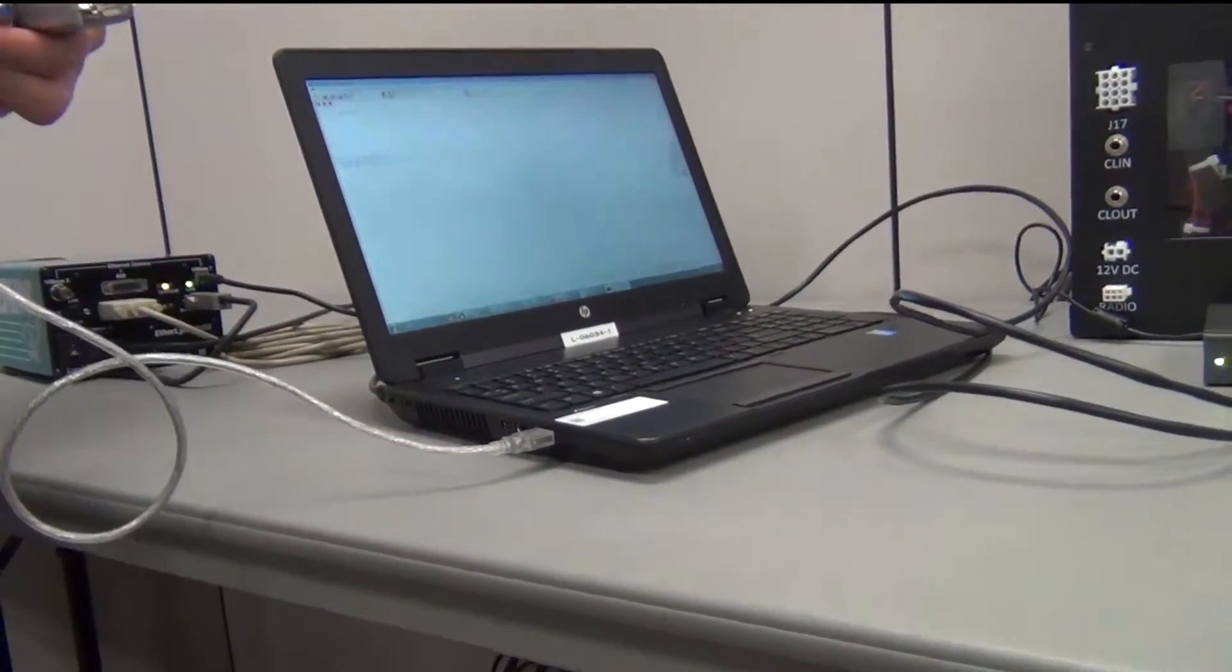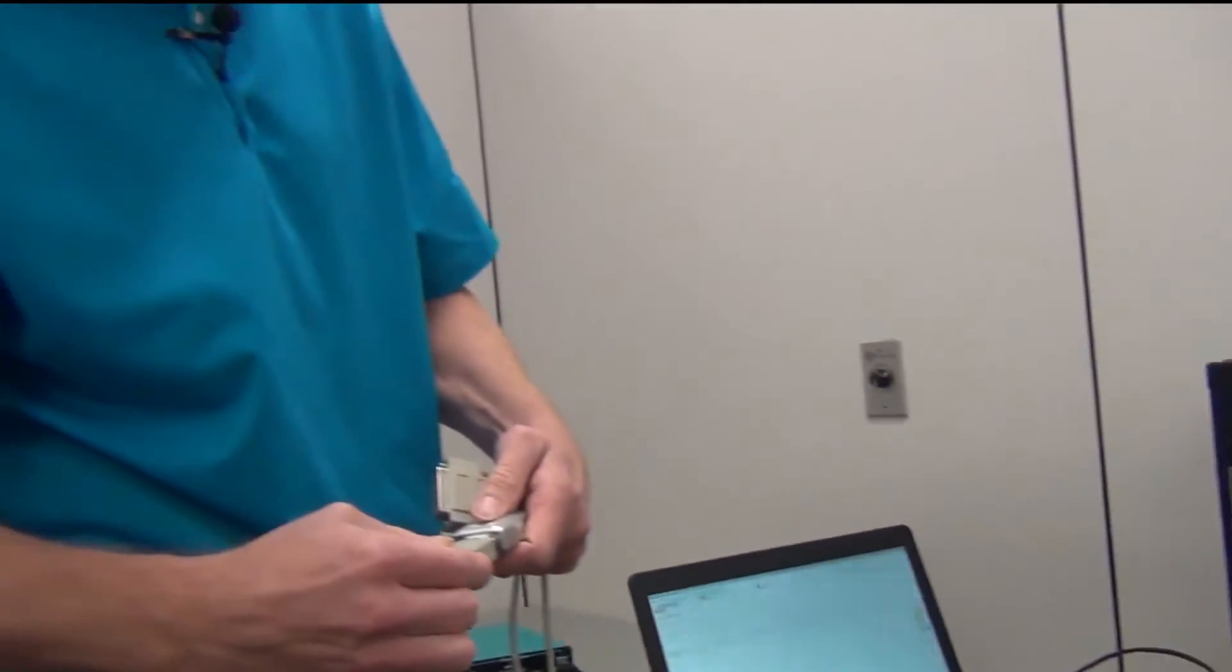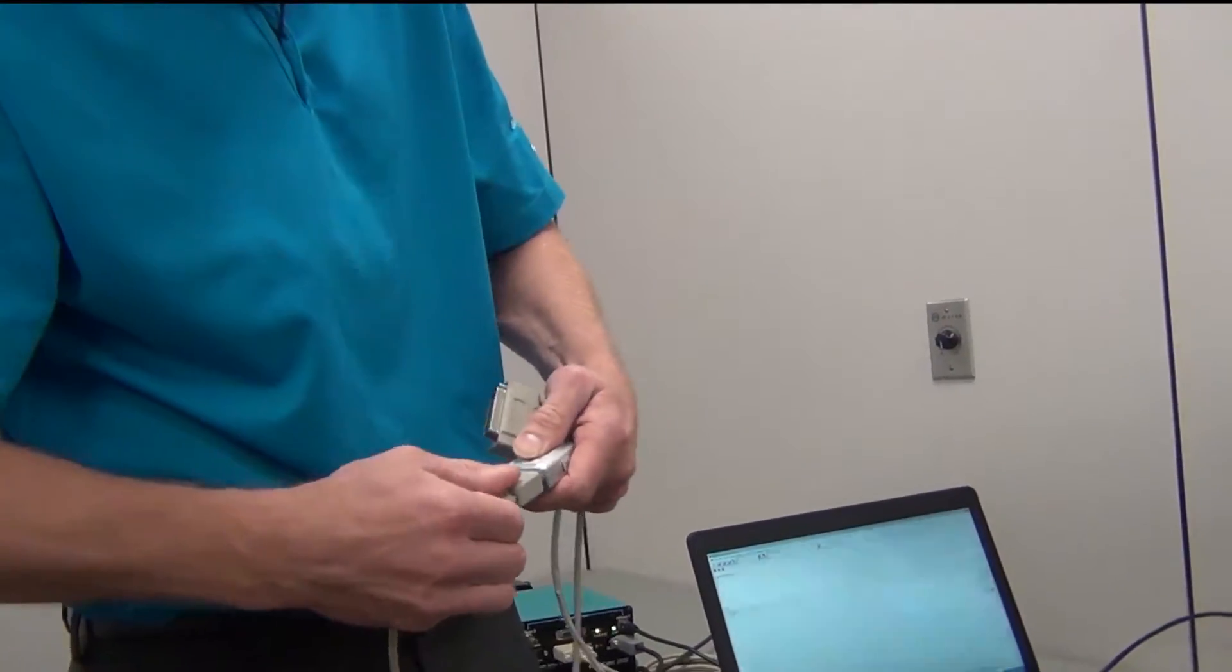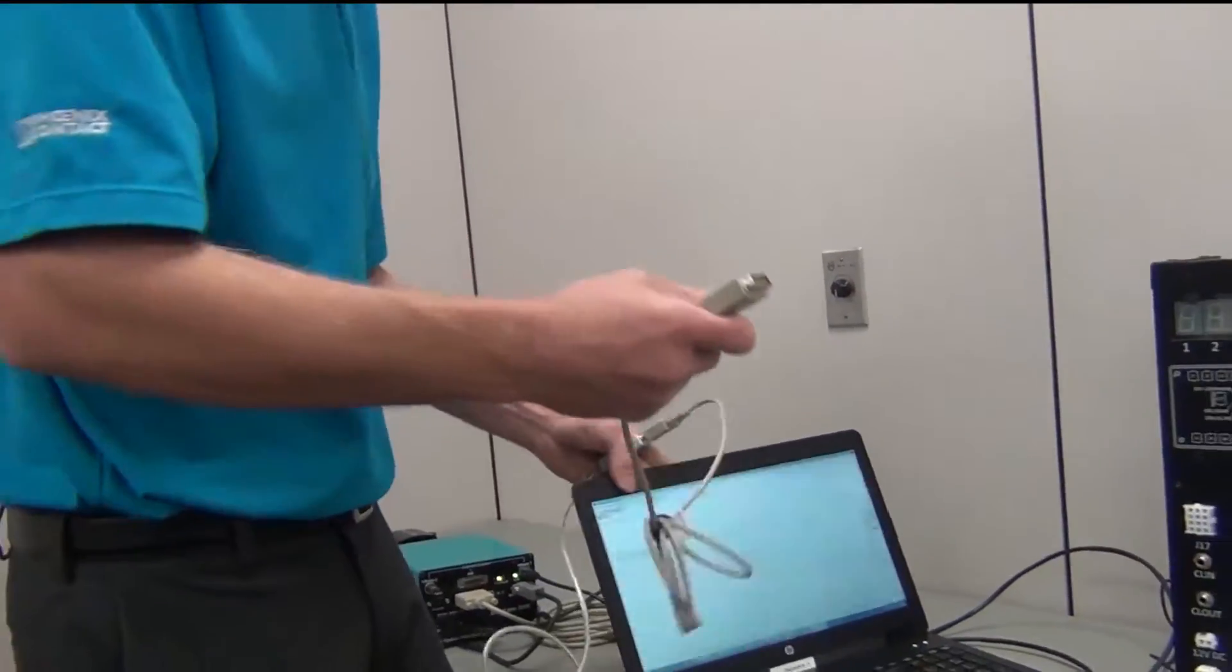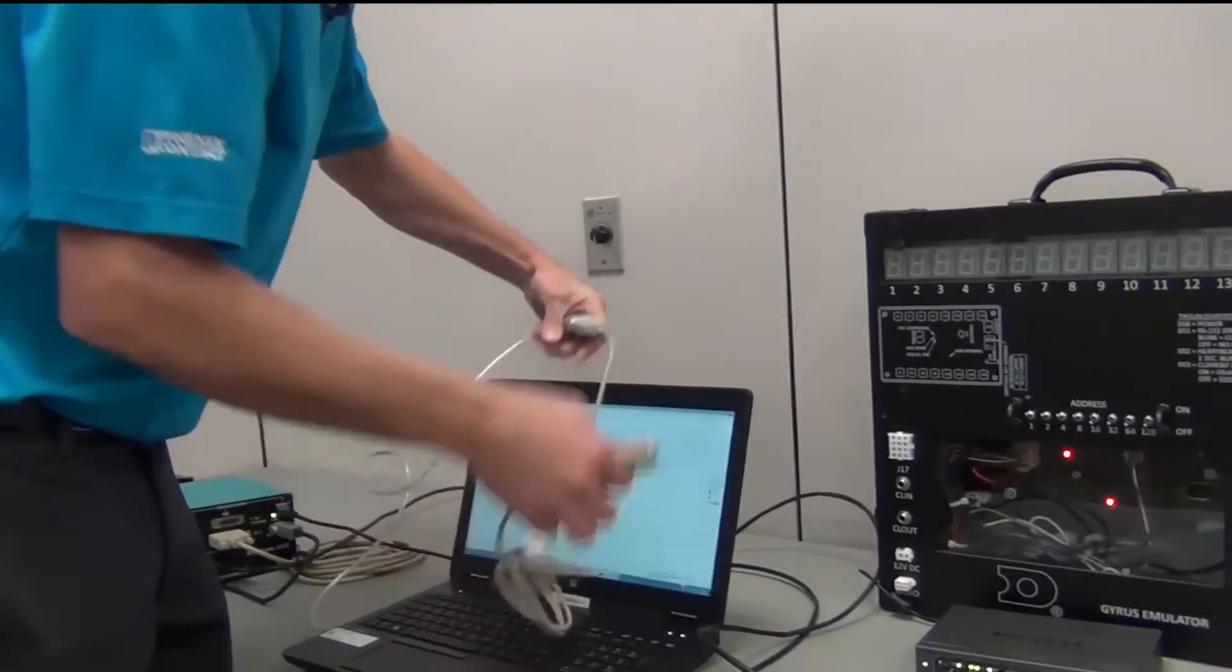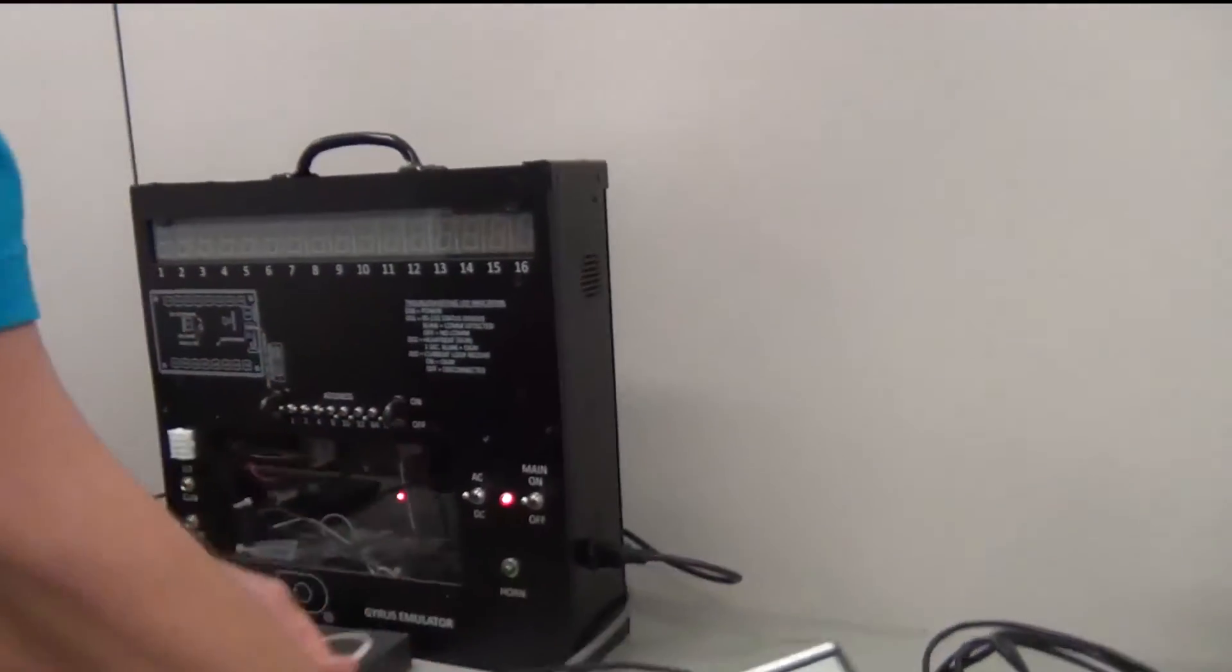And then we'll connect a 9-pin to a 25-pin cable. We'll connect the 25-pin to the back of the Allsport 5000.